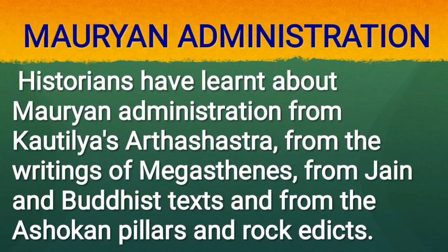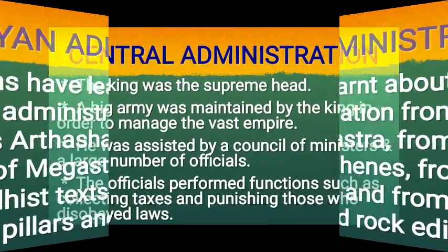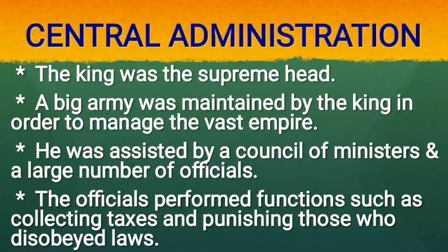Mauryan Administration: Historians have learnt about Mauryan administration and society from Kautilya's Arthashastra, from the writings of Megasthanes, from Jain and Buddhist texts, and from the Ashokan pillars and rock edicts. Central Administration: The king was the supreme head. A large army was maintained by the king to manage the vast empire. He was assisted by a council of ministers and a large number of officials. The officials performed functions such as collecting taxes and punishing those who disobeyed laws.